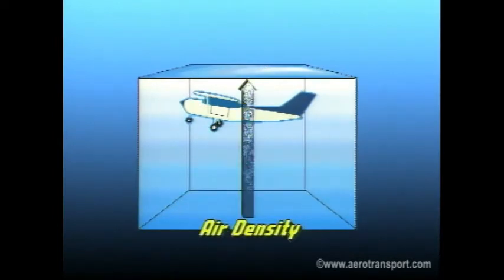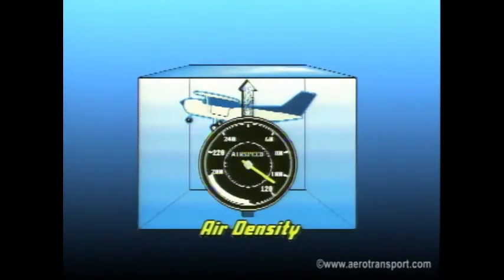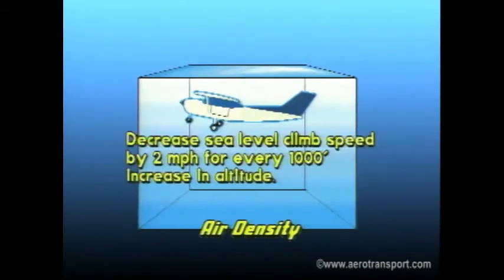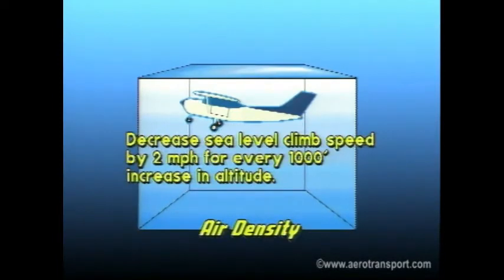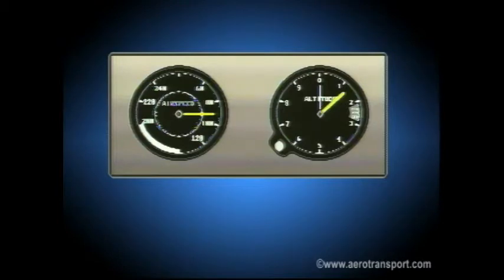Air density also affects the operation of the airspeed indicator. As you gain altitude, the density of the air decreases. This causes the airspeed indicator to record a lower than actual airspeed, although the actual speed of the aircraft may be relatively unaffected. To maintain a relatively accurate rate of climb, use the following rule of thumb: decrease the recommended indicated sea level climb speed by 1.75%, or about 2 miles per hour, for every 1,000-foot increase in altitude above sea level. Do not include the first 1,000 feet.